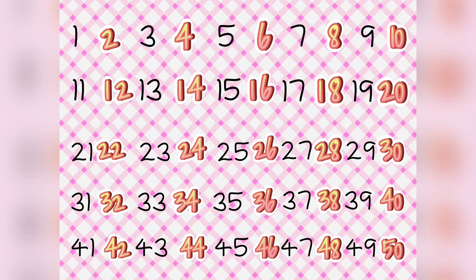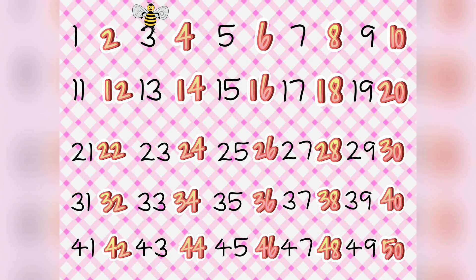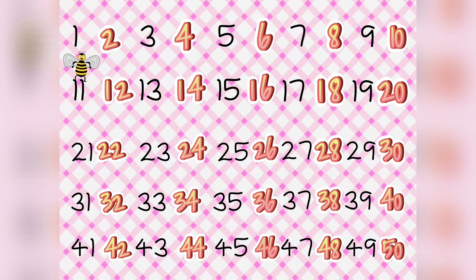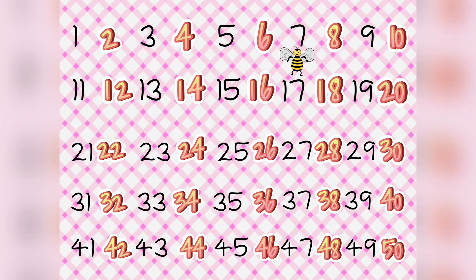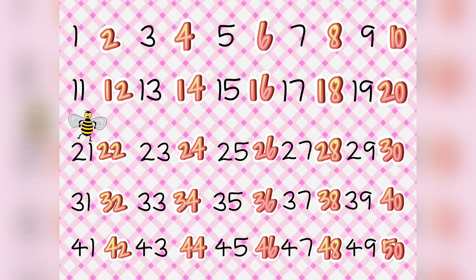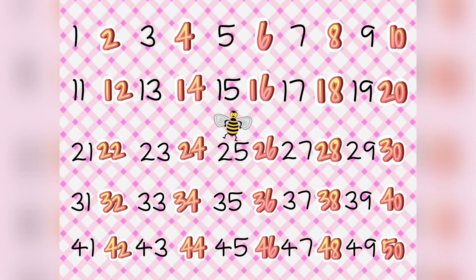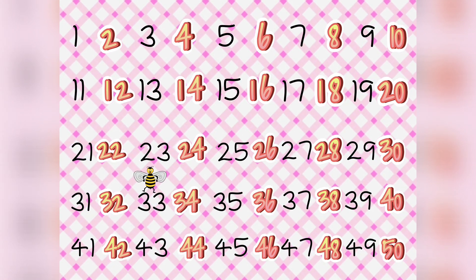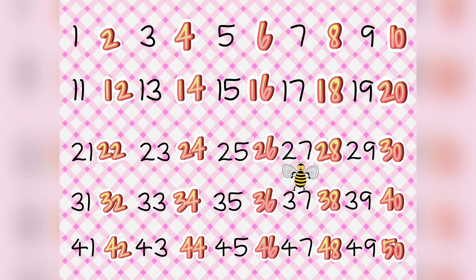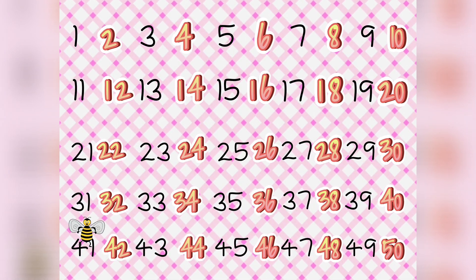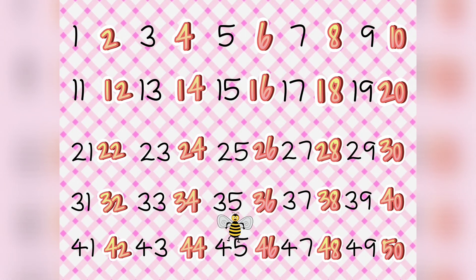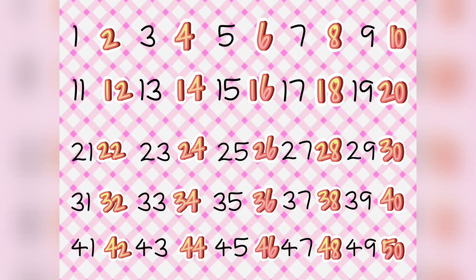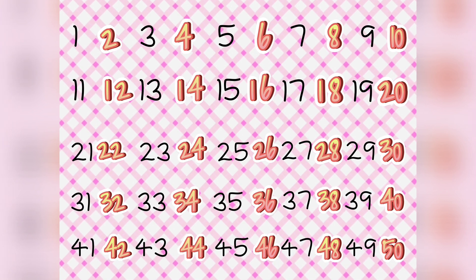This example is skip counting by 2 using the odd numbers. Let us count again: 1, 3, 5, 7, 9, 11, 13, 15, 17, 19, 21, 23, 25, 27, 29, 31, 33, 35, 37, 39, 41, 43, 45, 47, 49. Now let's go to skip counting by 2 using even numbers.